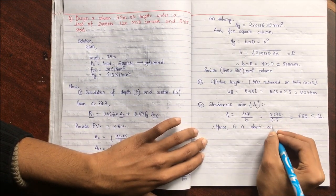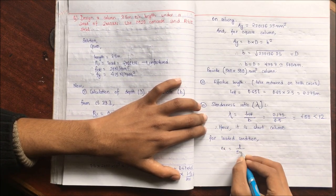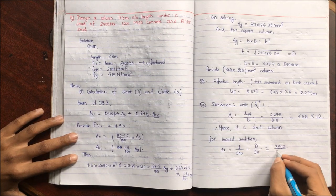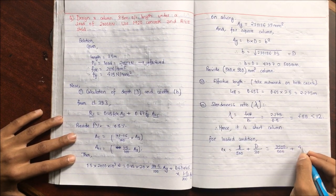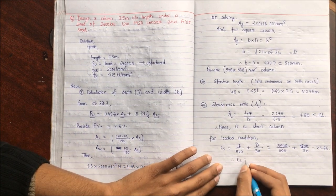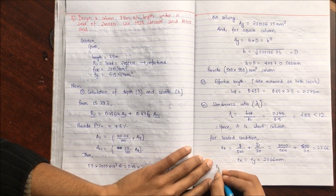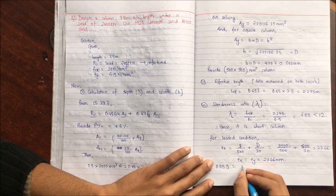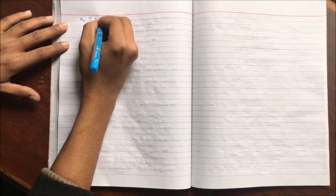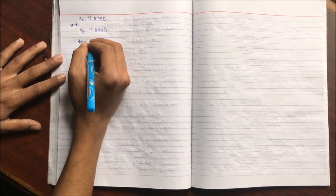For the loading condition, eccentricities EX and EY are computed. EX = L/500 + D/30 = 3500/500 + 500/30 = 23.66 mm. Since it is a square column, EX = EY = 23.66 mm. The minimum eccentricity limit 0.05D = 0.05B = 25 mm. Since EX ≤ 0.05D and EY ≤ 0.05B, the column is designed as a short axially loaded column.